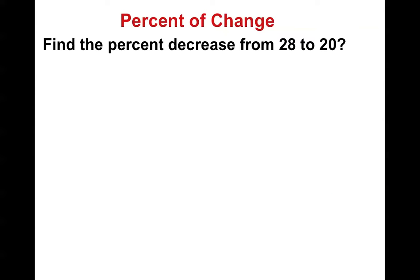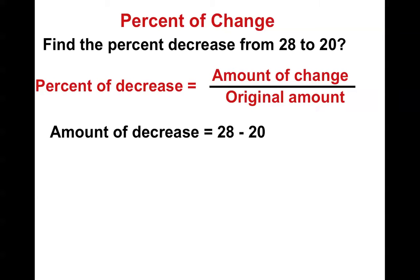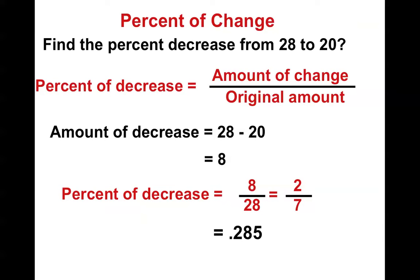Alright. So find the percent of decrease. Notice now we're decreasing. So what do we do? Let's find the amount that something changed. It changed 8, which means it had a decrease from 8, and the original amount was the 28. So we divide. We get a nice decimal of 0.285. I rounded that to the nearest thousandth. And now we find our percentage, 28.5%.